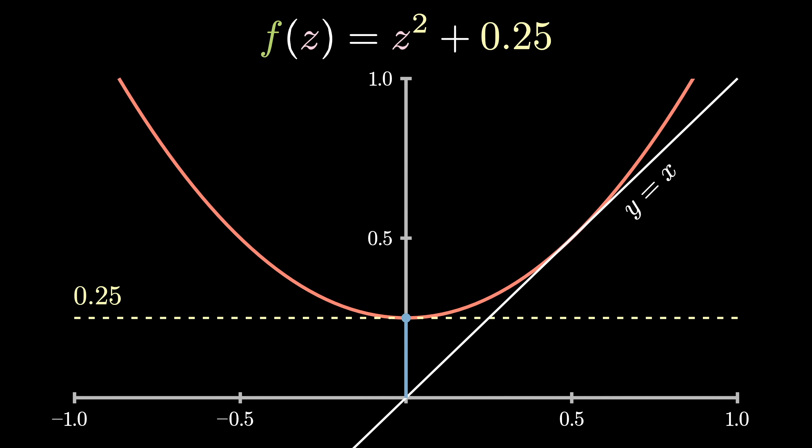After this, we set the input to be equal to the output, or the x coordinate equal to the y coordinate, which has the same effect as moving right until we hit the line y equals x. And then we repeat, giving us a nice sort of bouncing effect.